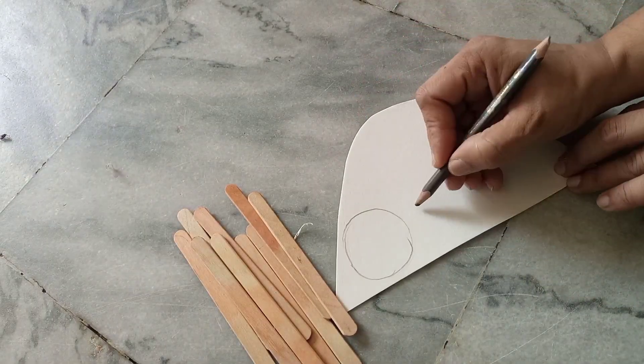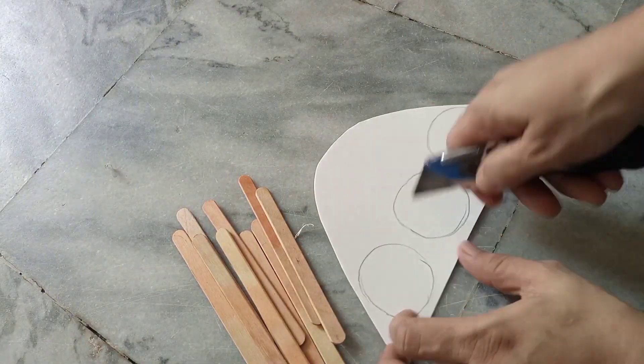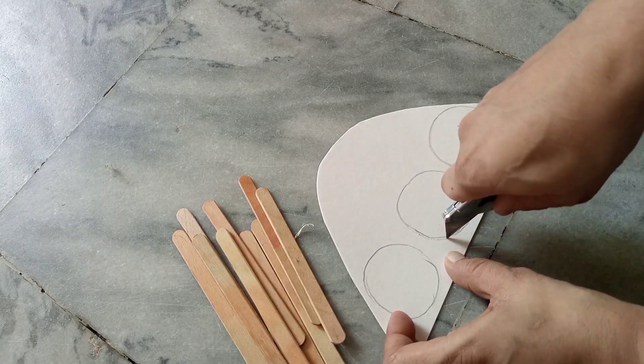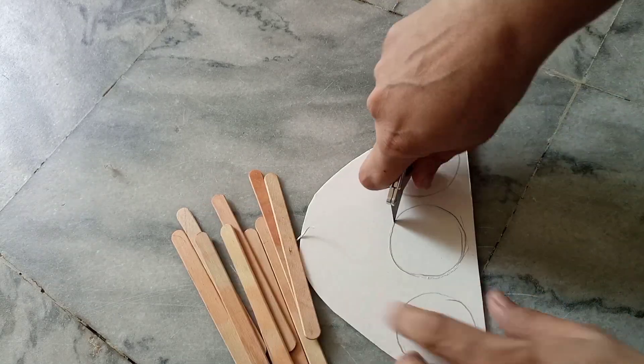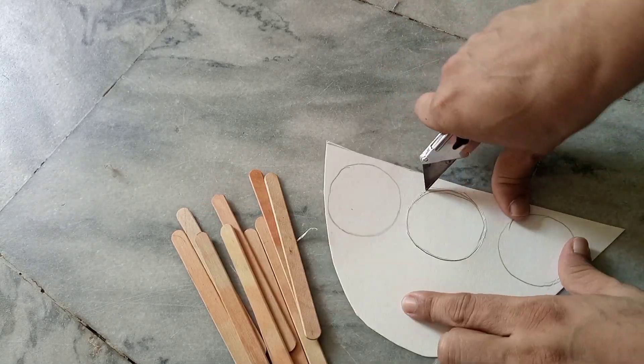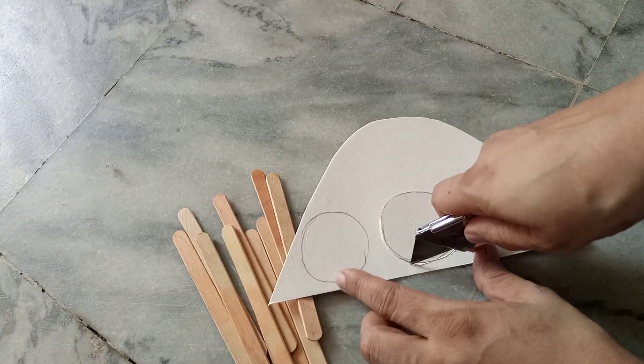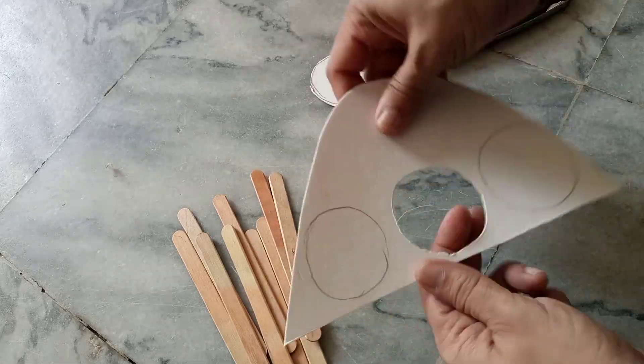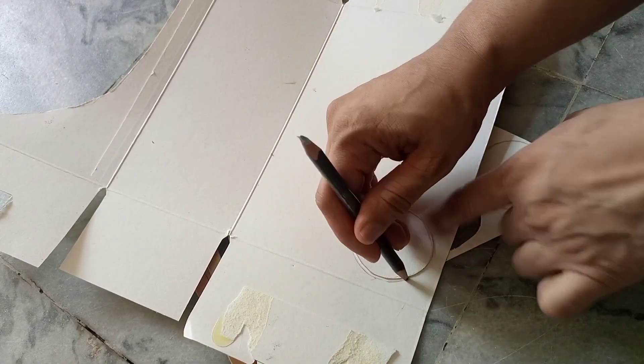Draw three circles with the help of a pencil and you will cut the middle one only with the help of a cutter. Just take out this part of the cardboard and cut it out. We are cutting this because here your numbers will be displayed one, two, three, four and so on.